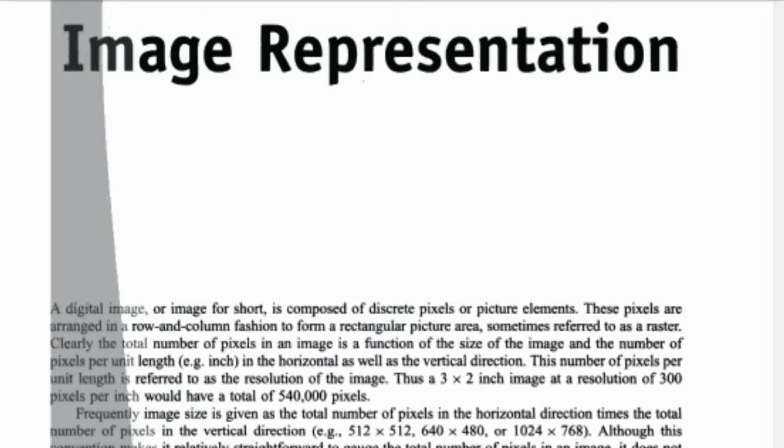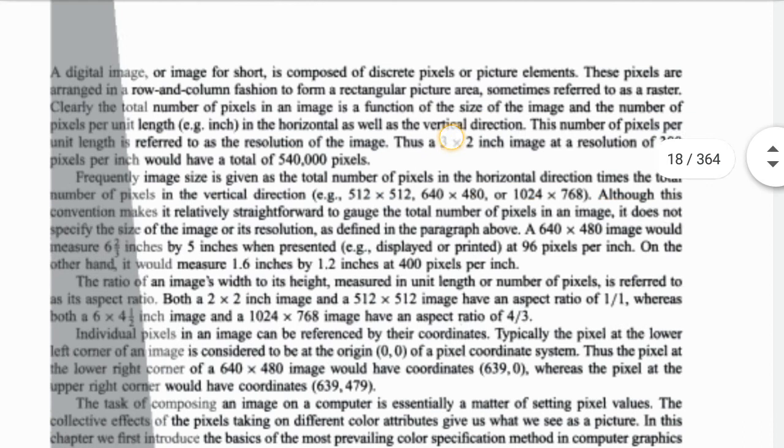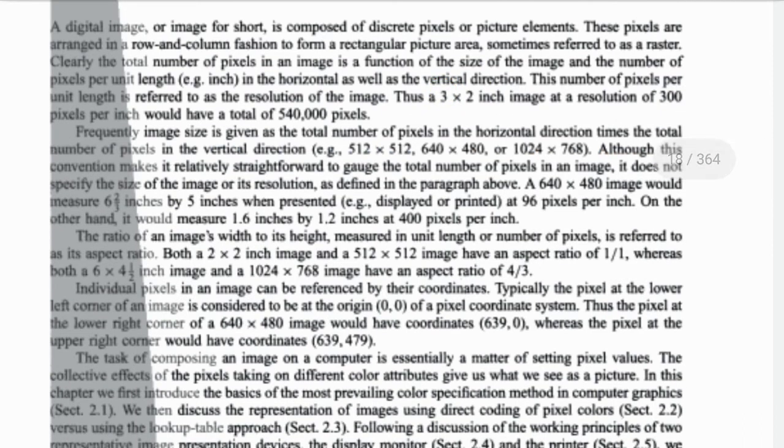A digital image, or image for short, is composed of discrete pixels or picture elements. These pixels are arranged in a row and column fashion to form a rectangular picture area, sometimes referred to as a raster.